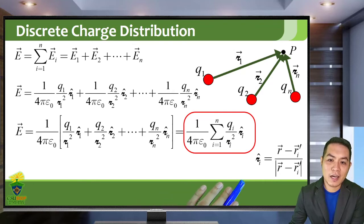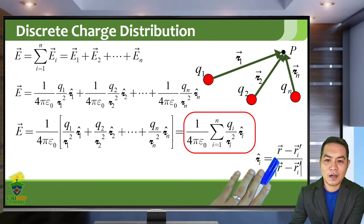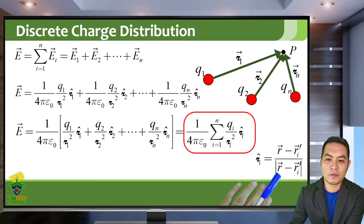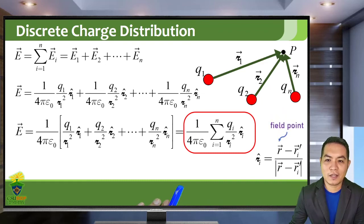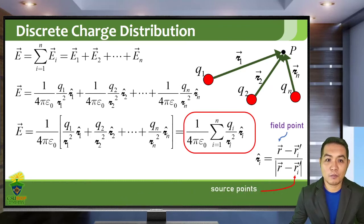Collecting the common terms — 1 over 4π epsilon naught — we get the formula for a discrete charge distribution: you sum over Q sub i over R sub i squared times R i hat. Note that R i hat are the unit separation distance vectors, obtained by dividing R minus R i prime, the separation distance vector, by its magnitude. In this case, we have one field point but multiple source points R i prime.